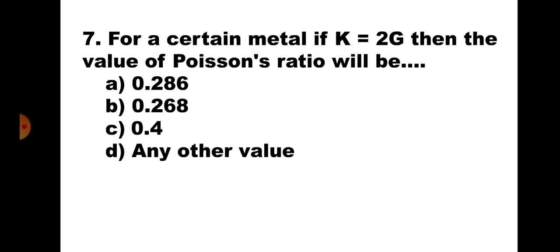Question number 7. For a certain metal, if K = 2G, then the value of Poisson's ratio will be: A. 0.286, B. 0.268, C. 0.4, D. Any other value. Writing the relations E = 2G(1 + μ) and E = 3K(1 − 2μ), equating them, and substituting K = 2G, you get μ = 0.286. Hence, the correct answer is A: 0.286.